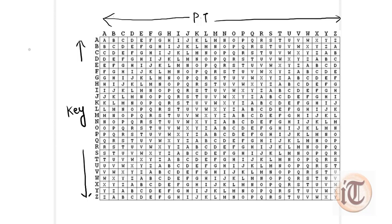For example, suppose the key is M and the plain text is D. We locate row M on the key side and column D on the plain text side. The intersection point of row M and column D gives us P. Therefore, the cipher text for this pair is P. This is how we use the Vigenère tableau to construct the cipher text for a given plain text.